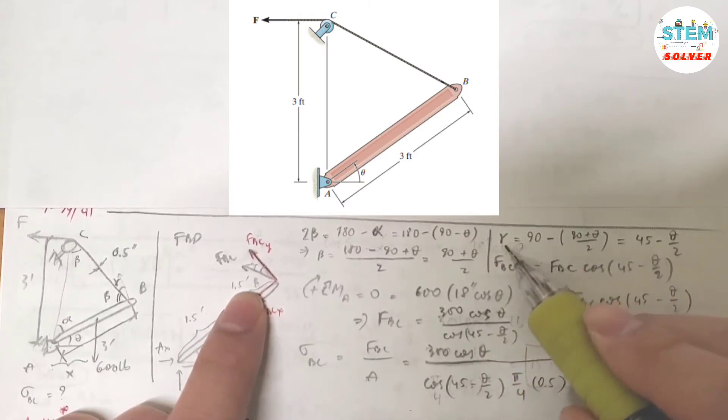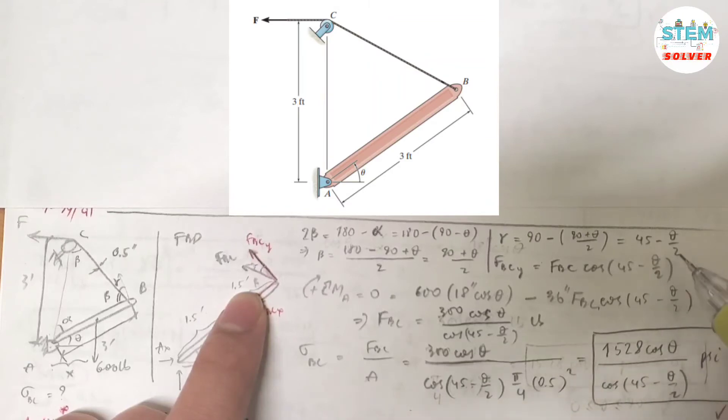So I got gamma equals 45 minus theta over 2. Got it?